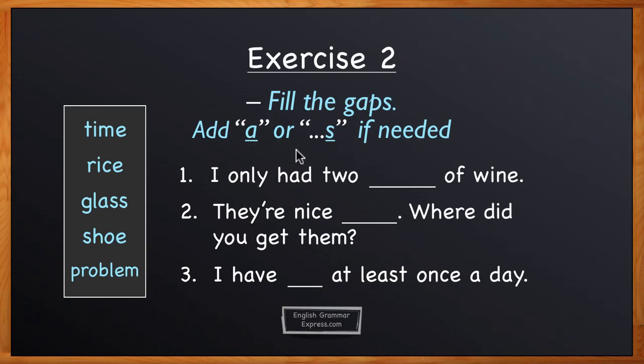Depending on if they're countable or uncountable, we can add an article a or an, or a plural s. Sentence number one: I only had two something of wine.